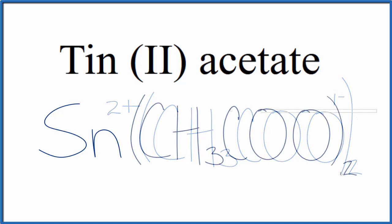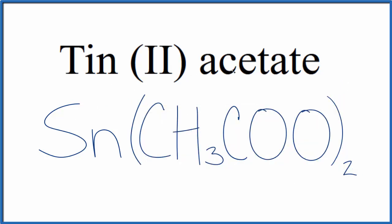and this is the formula for Tin(II) acetate, Sn(CH3COO)2. This 2 means that we have two acetate ions, and since each one is 1-, we balance out this 2+ charge here on the tin.